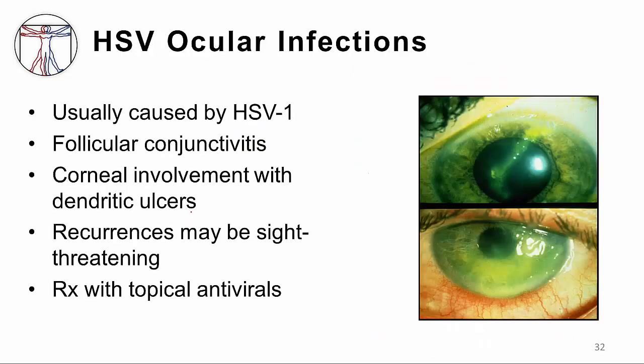Herpes type 1 infections can also cause eye involvement with a follicular conjunctivitis or potential progression to corneal involvement. With corneal involvement, dendritic ulcers may form. Recurrences of herpes in the eye can be sight threatening and therefore are important to recognize and to treat.